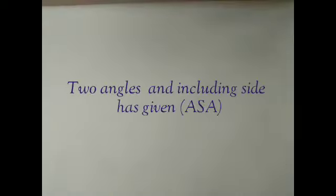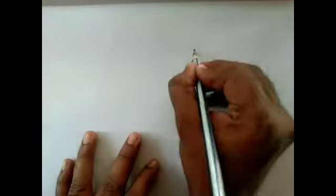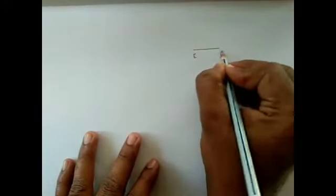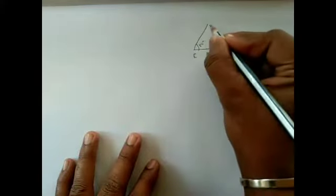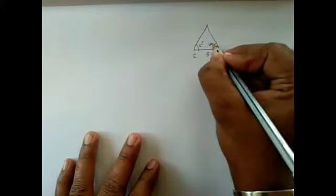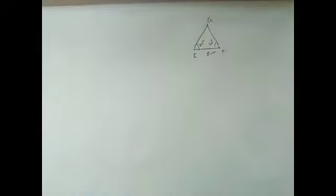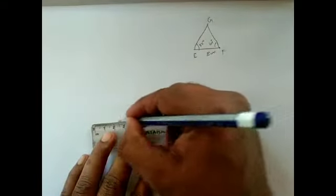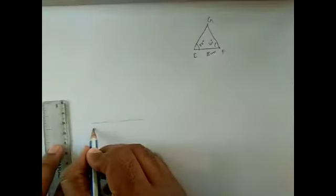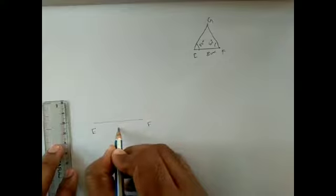Now we are going to construct a triangle when two angles and one side is given. They have given triangle base EF as 5 cm, angle E as 50 degrees and angle F as 60 degrees. EFG is the triangle. First we have to draw the base EF of 5 cm.